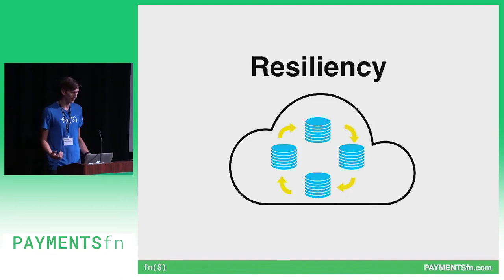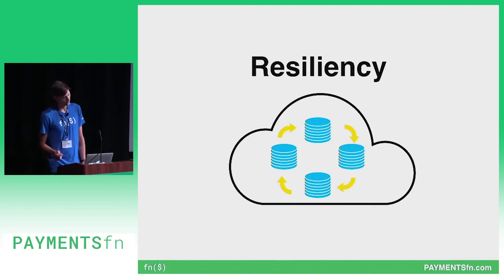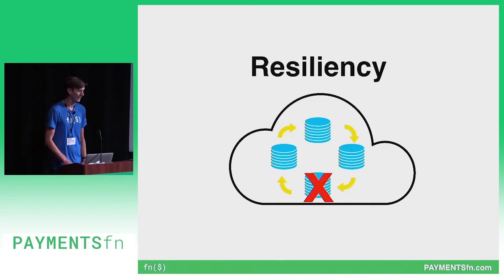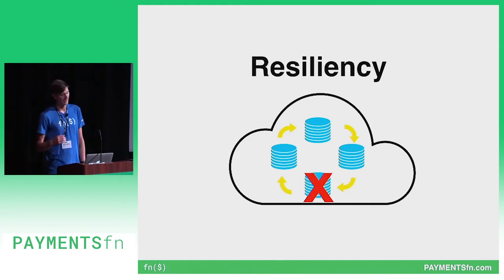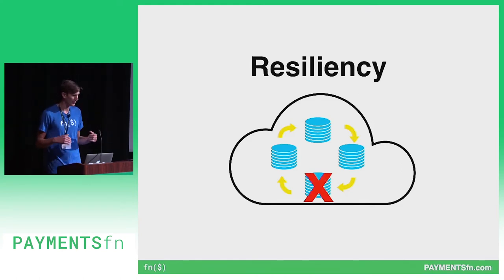So if Brad's walking by our server rack, spills a Big Gulp on one of our Riak hosts, it goes down — the cluster still functions, and it's with no manual intervention.